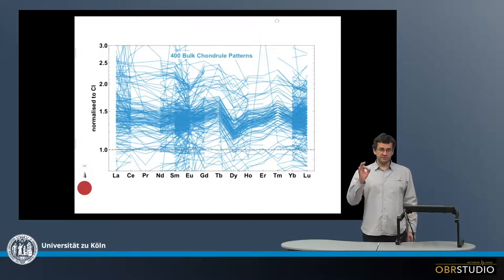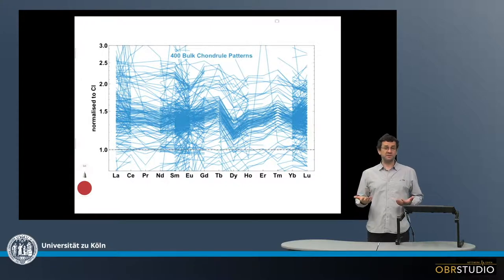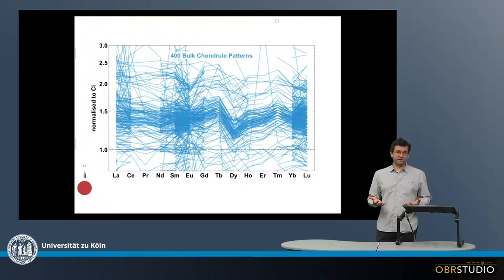When we look at chondrules, individual chondrules, and their rare earth element patterns, we observe that these patterns are typically flat. And this is what is shown in this plot here.